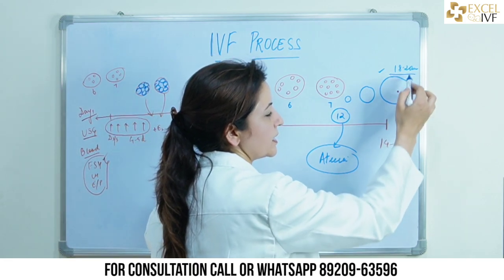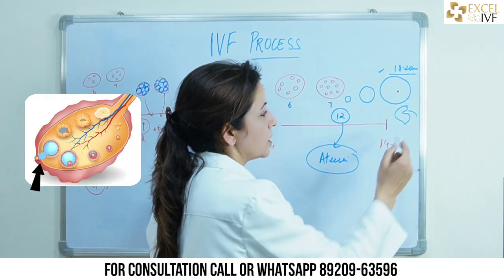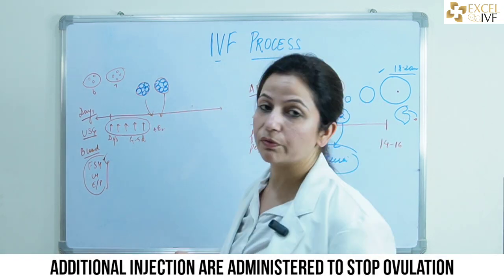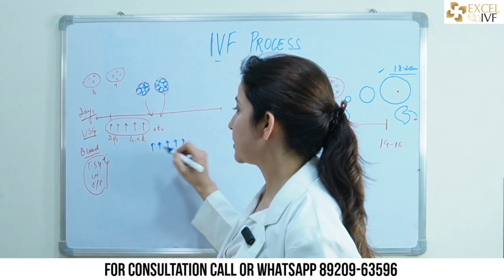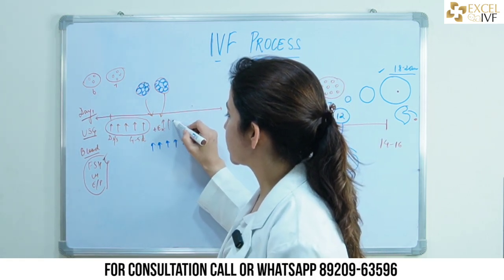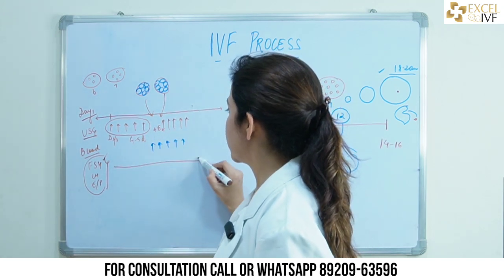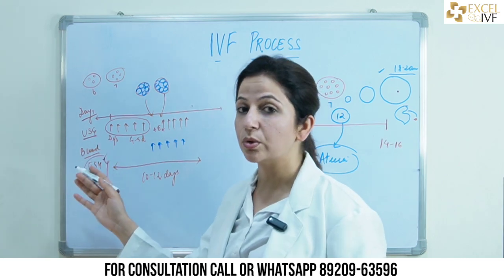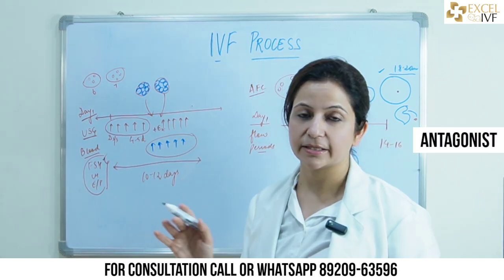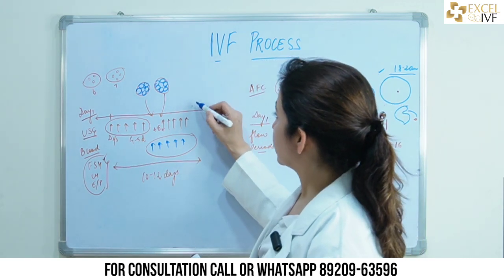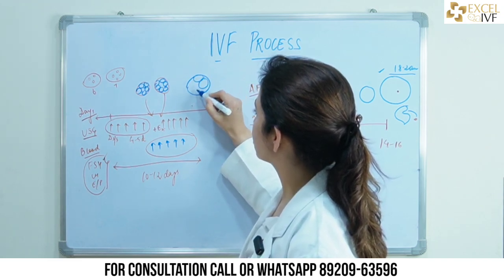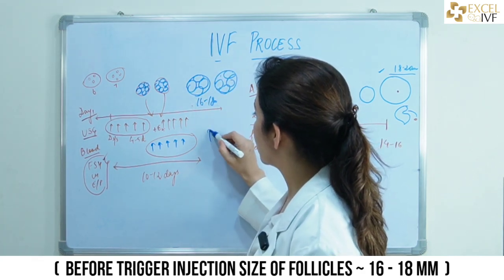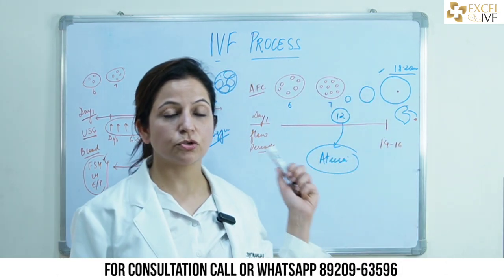In a natural cycle, once the follicle reaches maturity it will rupture and release the egg. In IVF, we don't want the egg released inside the body, so the most common protocol used is to stop ovulation. A different kind of injection — the antagonist — is added in the later half of the cycle while continuing the growth-stimulating injections. Overall, injections are given for around 10 to 12 days. The aim is to bring all follicles to around 16 to 18 mm before giving the final trigger injection, which causes egg maturity inside the follicles rather than ovulation.